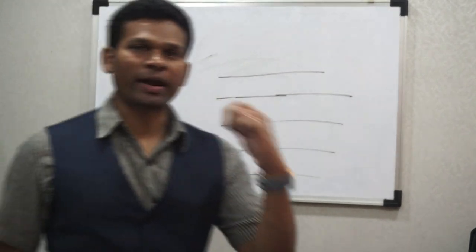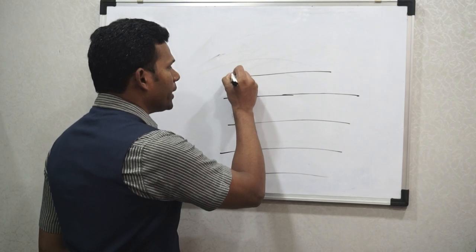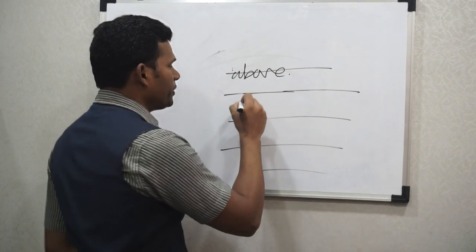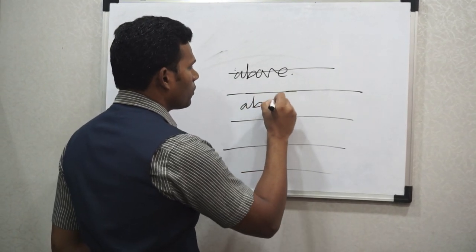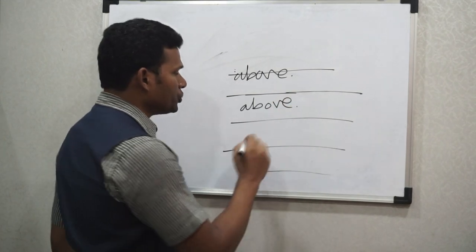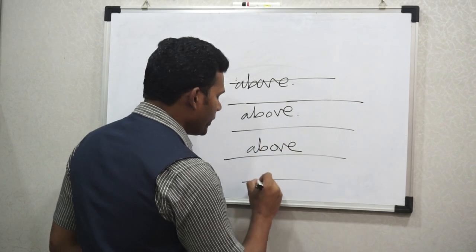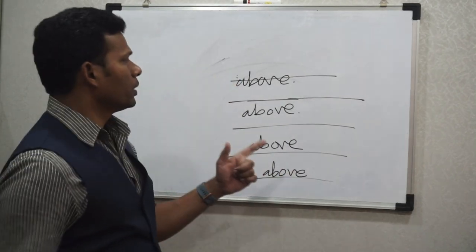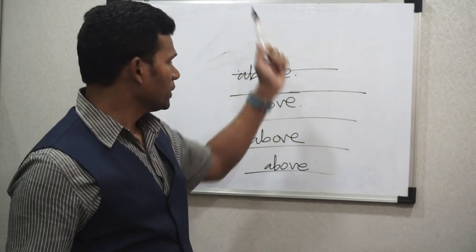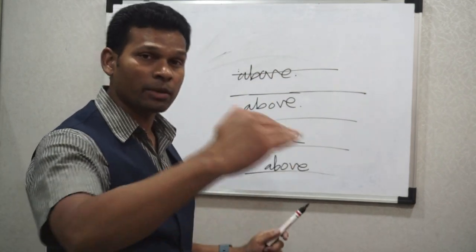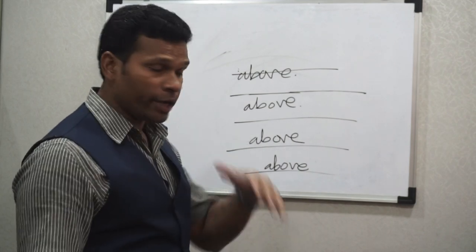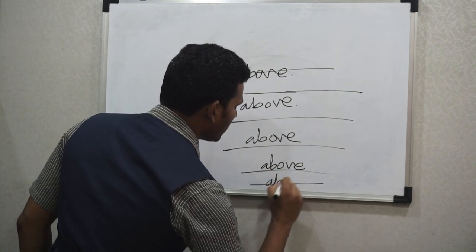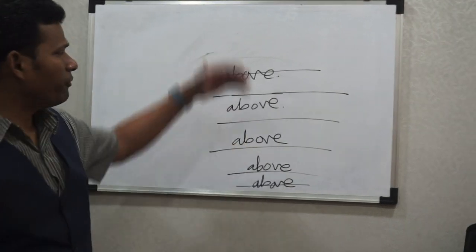On a ruled paper, while writing, a person may tend to write far above the line, or in between the lines, or just above the line, or directly on the line. And there will be a few people who write while cutting through the line. So there are these different writing positions — above, in the middle, just above, on the line, and cutting the line — each indicating a different mindset.